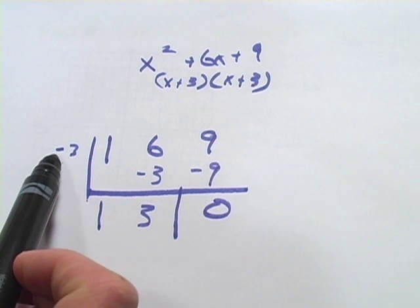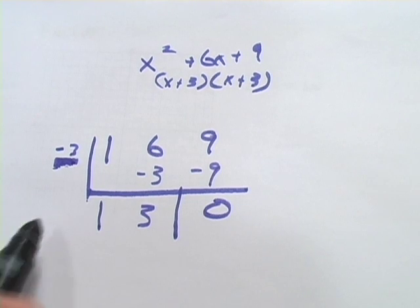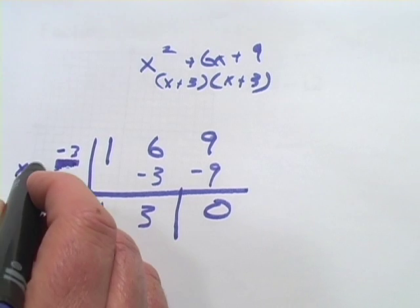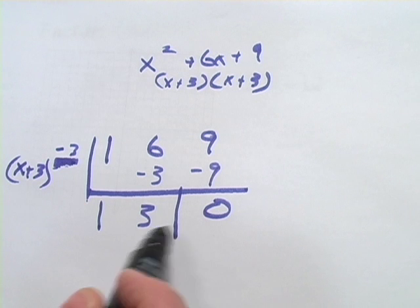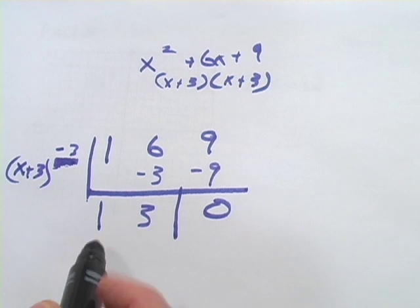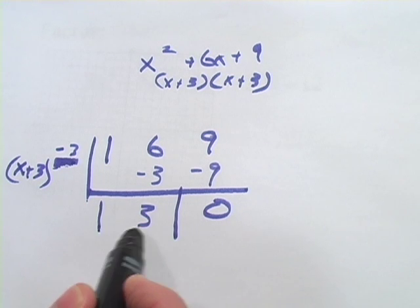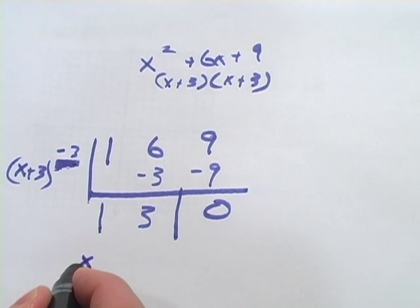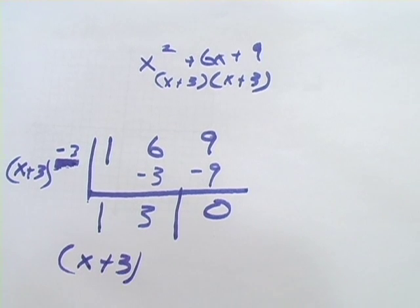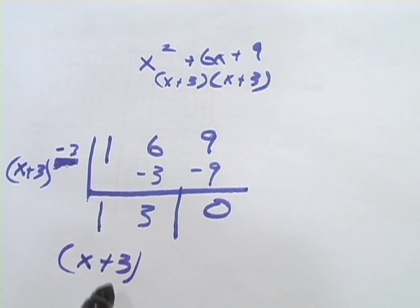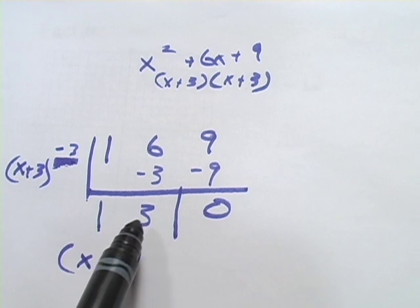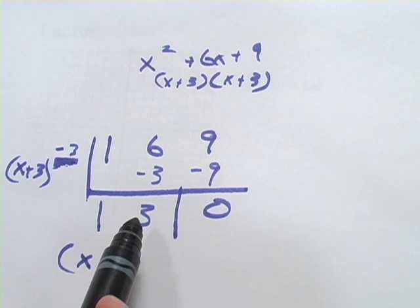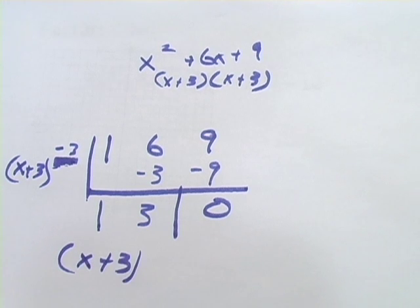That means this is one of the answers, one of the roots, one of the zeros. So that means x + 3 is a factor. Here, we can translate this back into an algebraic expression. The 1 is the x term. The 3 is the constant. So this would be x + 3. So our total list of factors would be x + 3 and x + 3. So that's how you use synthetic division. And with these longer problems, it can really come in handy and speed things up.